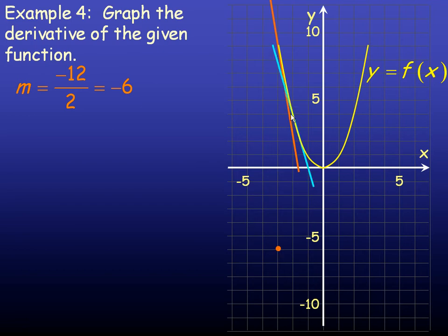If I draw a tangent line at negative 2, 4, the slope of this tangent line—if I read over 1, up 1, 2, 3, 4—actually, that one is very close. So the slope is about negative 4, and I'll put a dot at negative 4.